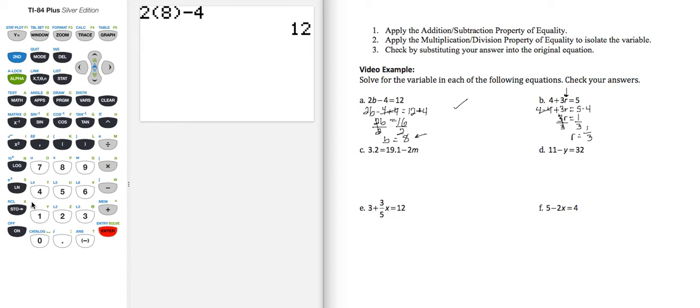Let's check. I'm going to take 4 plus 3 parentheses 1/3. So that's 3 times 1/3, and that result should give me 5. It does, which means R equals 1/3 checks and is the solution to our original equation.